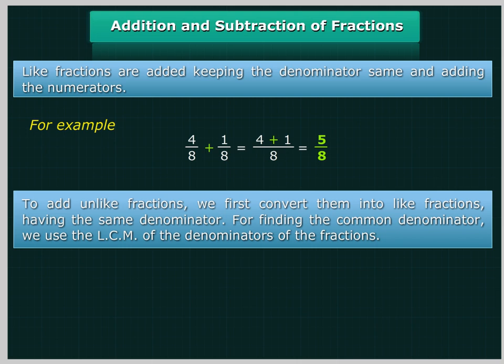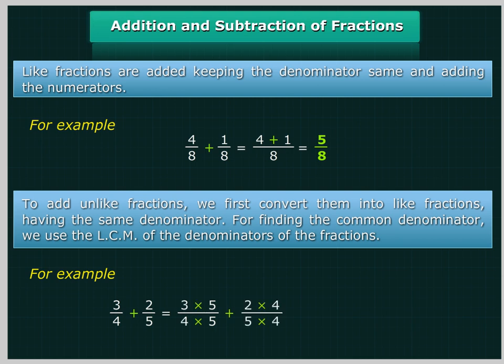To add unlike fractions, we first convert them into like fractions having the same denominator. For finding the common denominator, we use the LCM of the denominators of the fractions. For example, 3 upon 4 plus 2 upon 5 is equal to (3×5) upon (4×5) plus (2×4) upon (5×4), which is equal to 15 upon 20 plus 8 upon 20, which is equal to 23 upon 20.